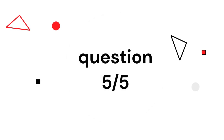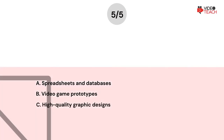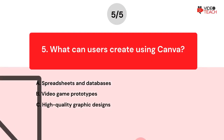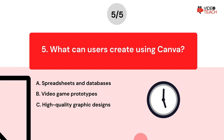Question number five. What can users create using Canva? Option A: Spreadsheets and databases. Option B: Video game prototypes. Option C: High-quality graphic designs. Now you have about 15 seconds to think about your answer.